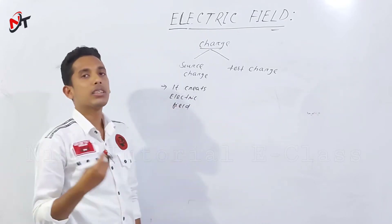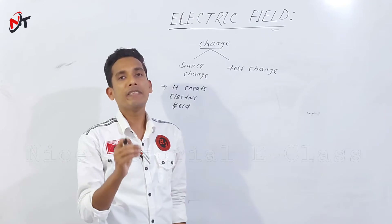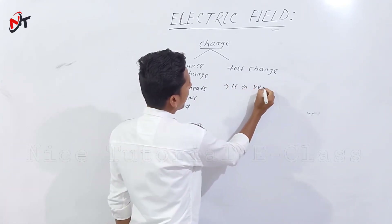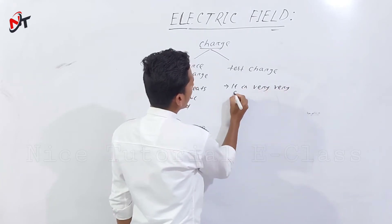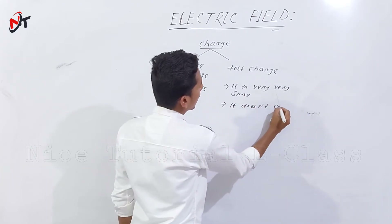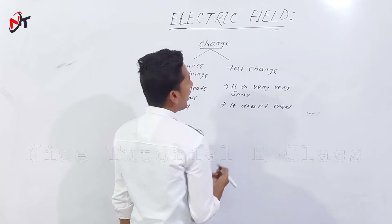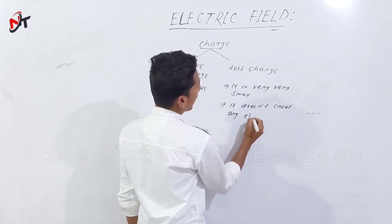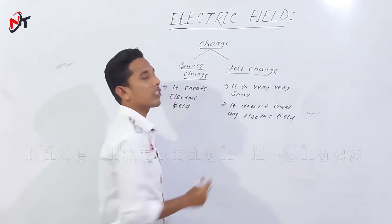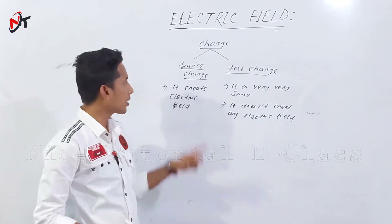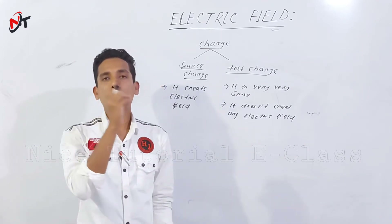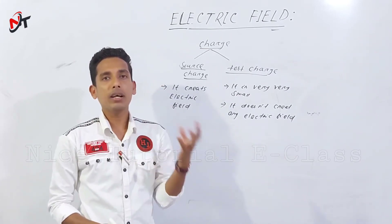The source charge — if you know the charge, you can use the electric field. The test charge is very small, so it does not create or produce any electric field. You can use the source charge and the test charge to define the electric field.